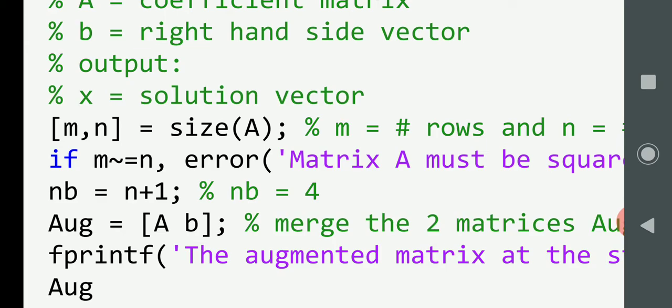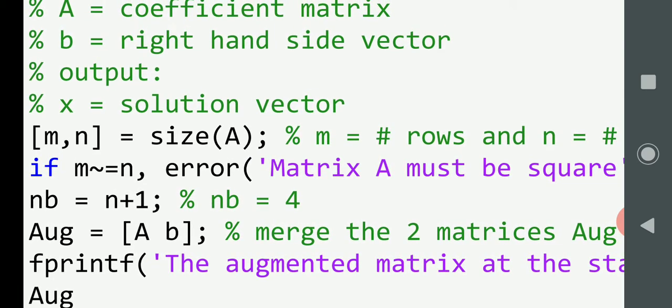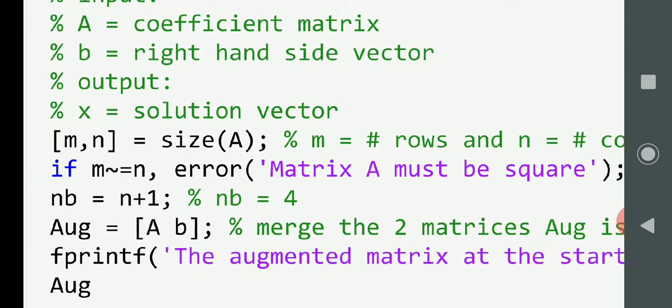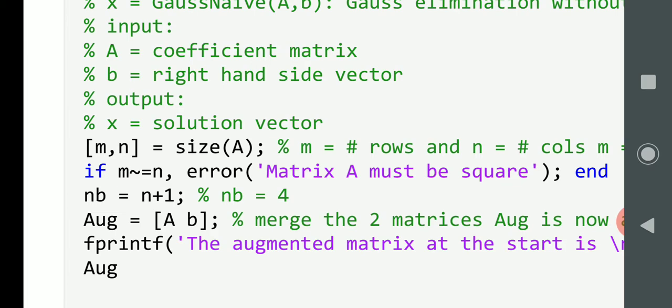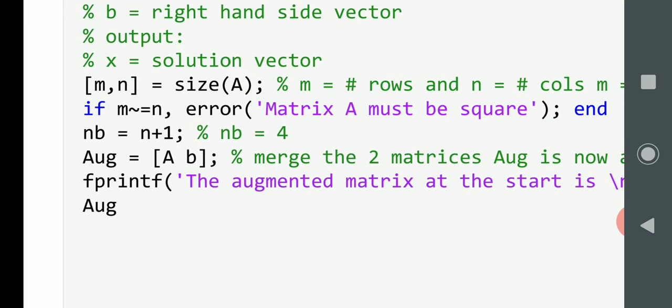So, we get A. Now, remember A in our example is a 3 by 3. But we just want to do a little error check. We get the number of rows and the number of columns. And if it's not a square matrix, it kicks out. So, we just did a little if statement there. If M does not equal N, we generate an error and the program ends. Next thing there, NB is going to be N plus 1. So, NB is going to be 3 plus 1 which is 4. And the augmented matrix is A and B.